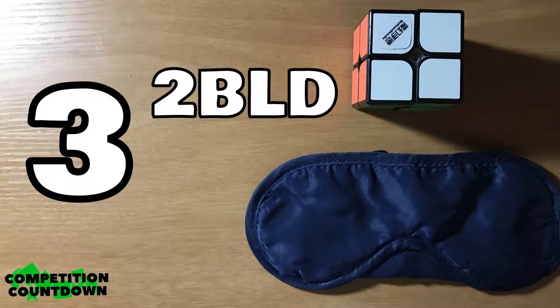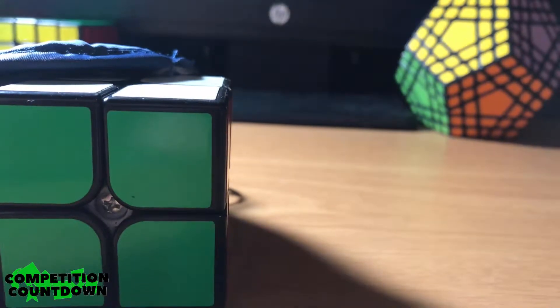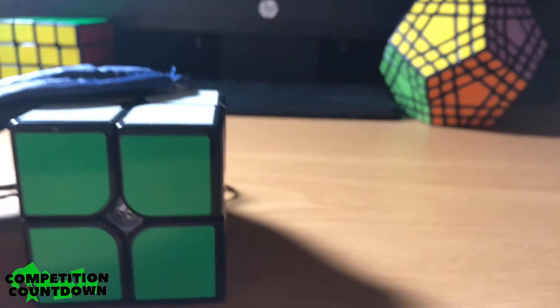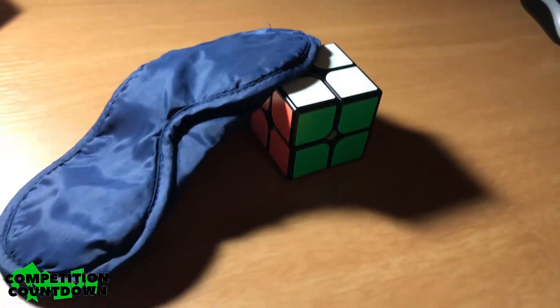For number 3, we have 2x2 Blindfolded or 2blind. Another relatively quick event for the fastest solvers. This would be a great event for cubers who are just getting into blindfolded solving.